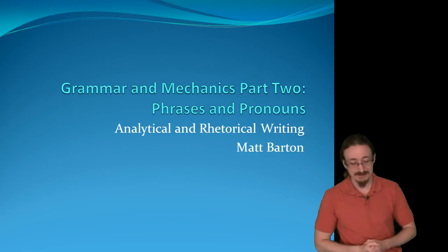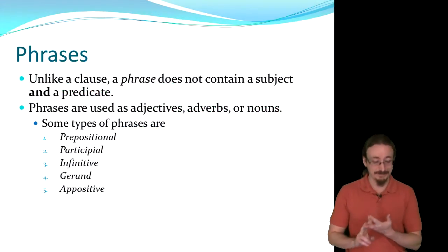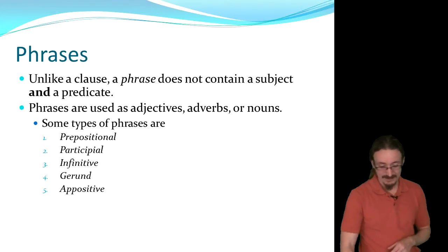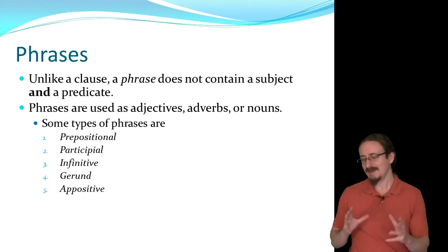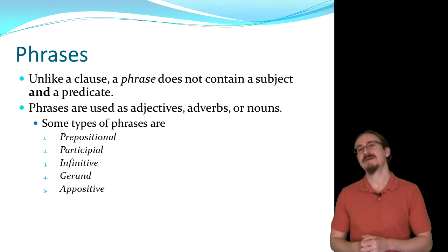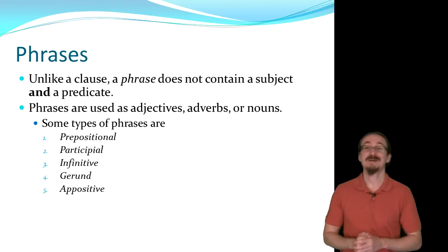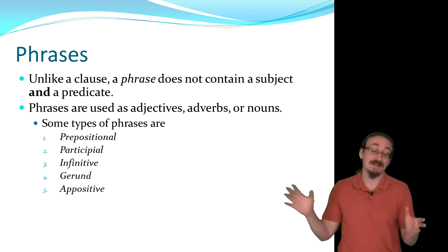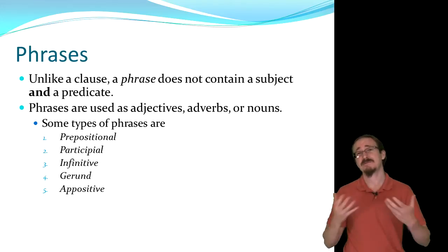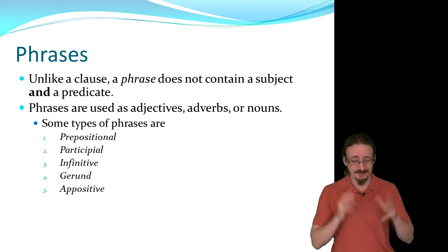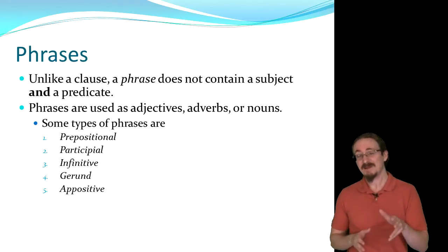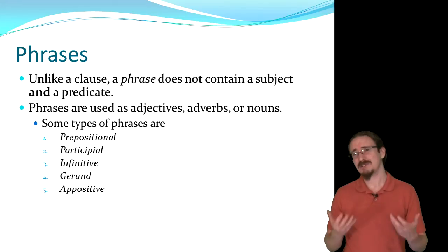We'll be talking about five types: the prepositional, participial, infinitive, gerund, and appositive. These are really cool, especially when you think about the sophistication of our language and all the kinds of functions they have. You could take a verb and make it do the work of an adjective, an adverb, or even a noun. Our language is very flexible and a very powerful tool. I like to zero in on these things like phrases and clauses because they really get at just how incredible our language is.